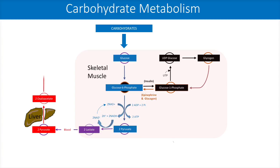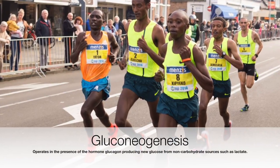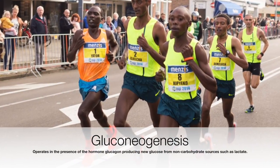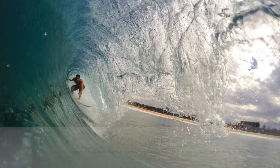Pyruvate is converted back into glucose in a pathway called gluconeogenesis, which operates in the presence of the hormone glucagon and when carbohydrate levels are low, supplying needed glucose to the working muscles.